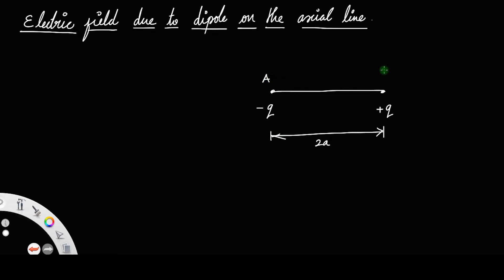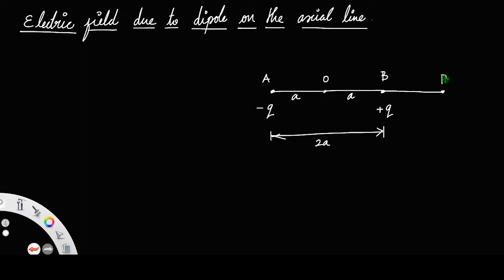Let this point be A and let this point be B. Let O be the center of the dipole. If the whole length is 2a, then the distance from O to each charge is a. The distance between the charges is 2a. These constitute a dipole, and we are interested in finding the electric field on an axial line. The axial line is the extension of the line AB, and point P is a point on this axial line.